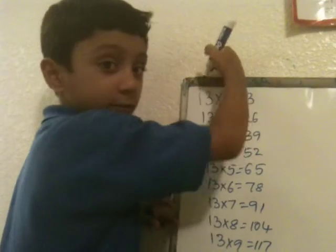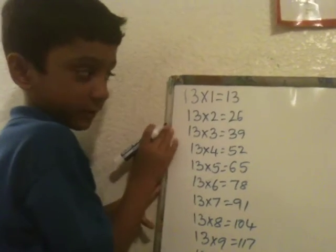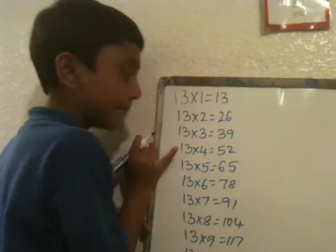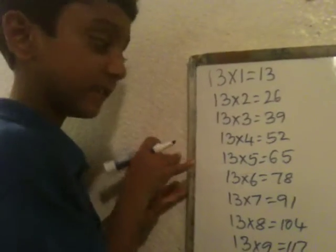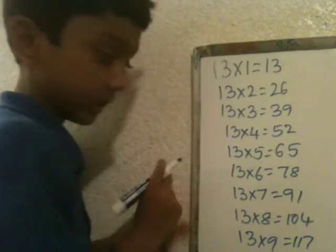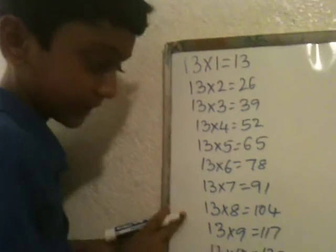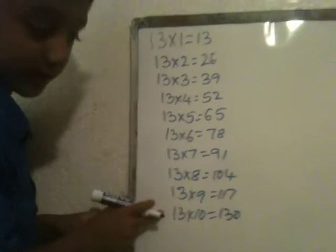So, 13 ones are 13, 13 twos are 26, 13 threes are 39, 13 fours are 52, 13 fives are 65, 13 sixes are 78, 13 sevens are 91, 13 eights are 104, 13 nines are 117, 13 tens are 130.